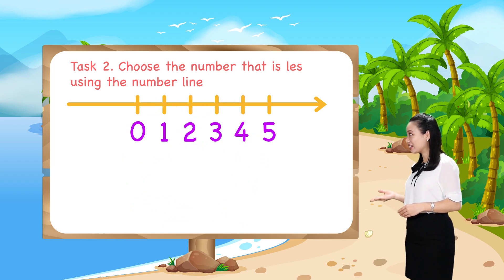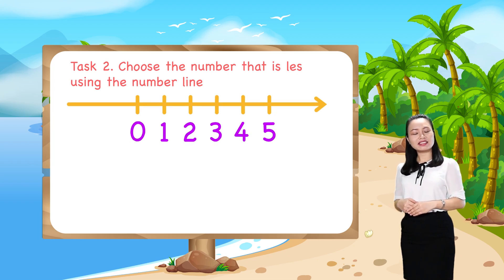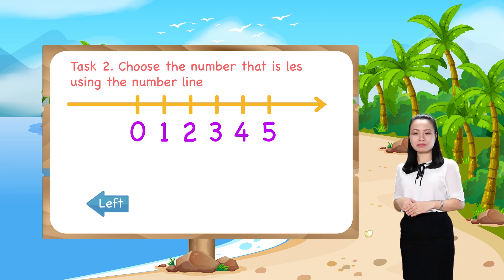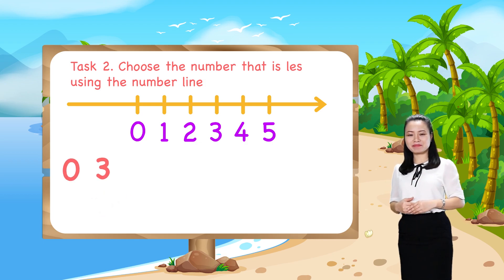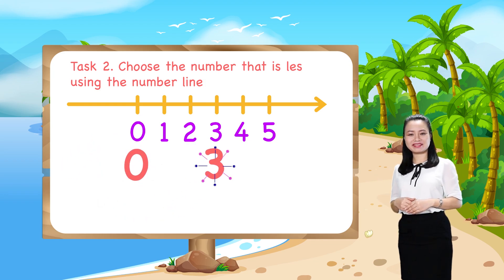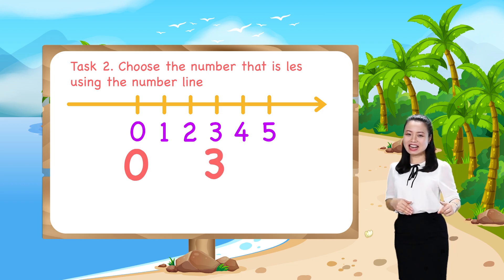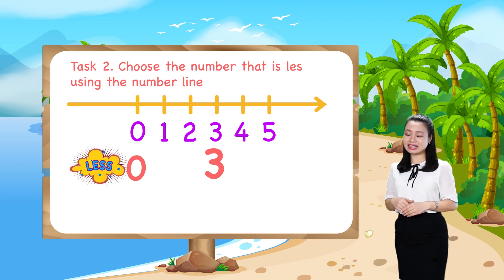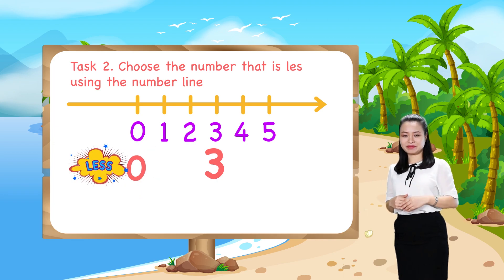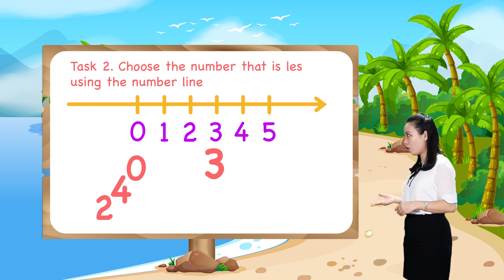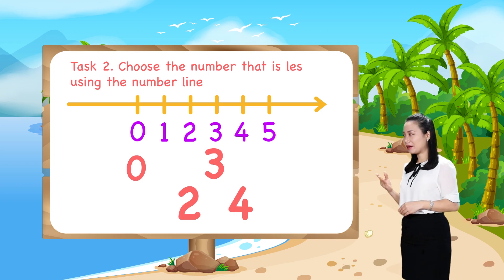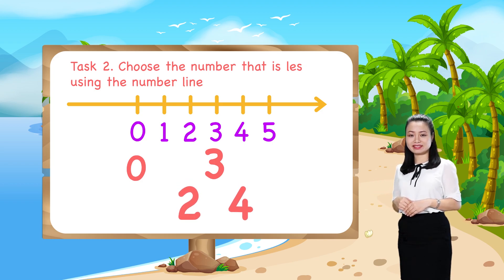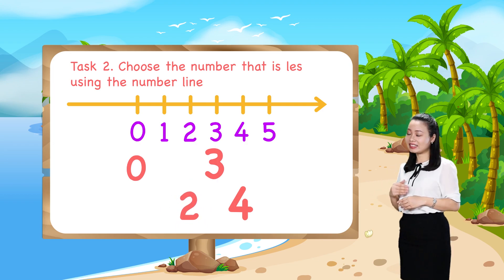First, look at the number line, then decide which number is to the left of the other number. For the pair 0 and 3, number 0 is to the left of number 3, so 0 is less. Next, for the pair 4 and 2, number 2 is to the left of number 4, so 2 is less.